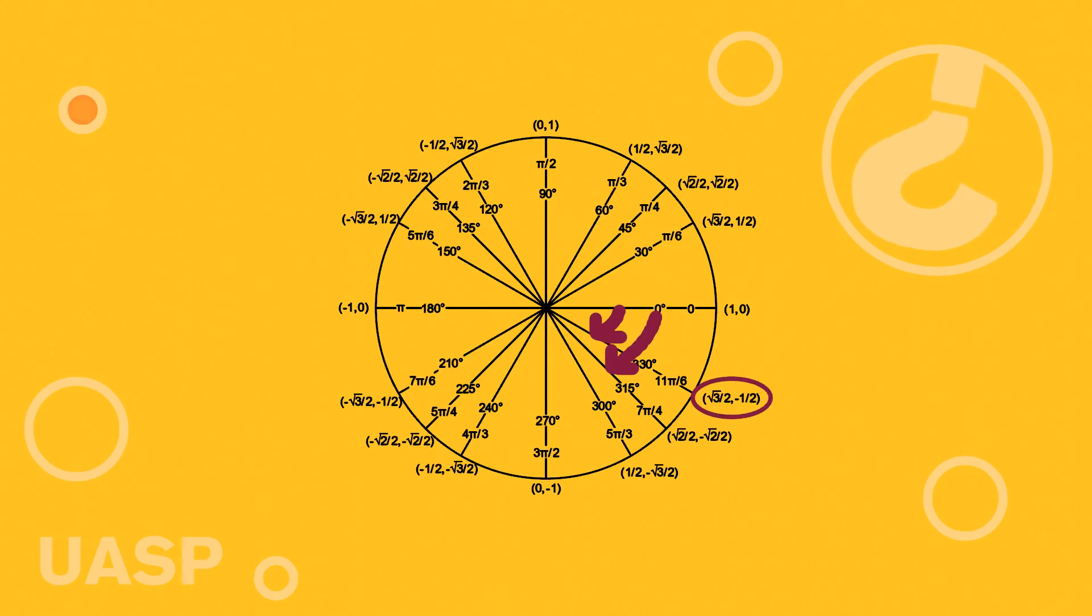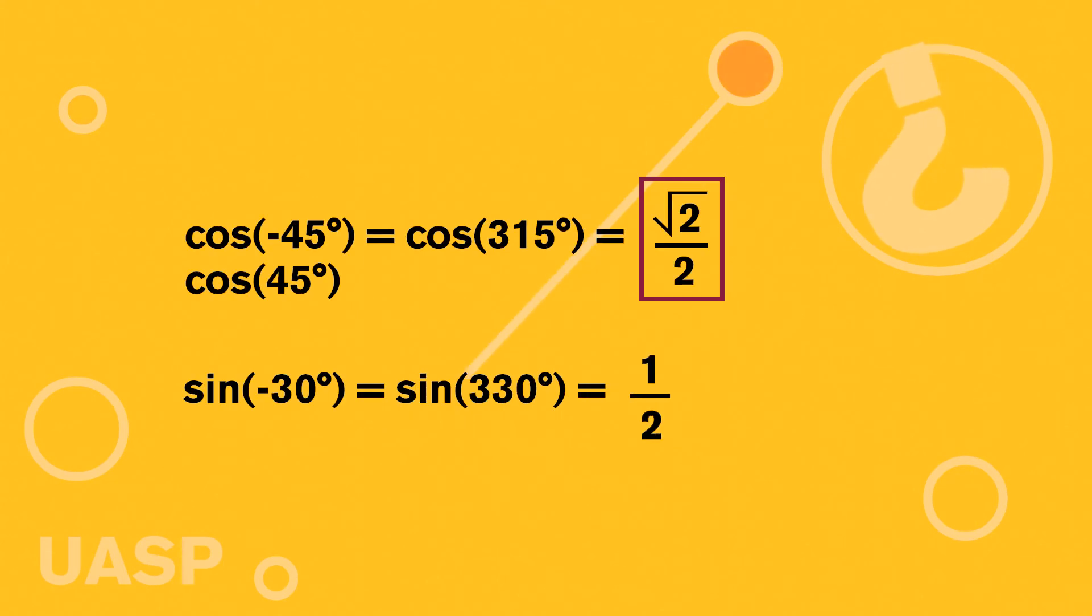And then what we can do, remember we're looking for a sine, so it's going to be the y, which is a negative one half. And that's how you solve negative angles on a unit circle.